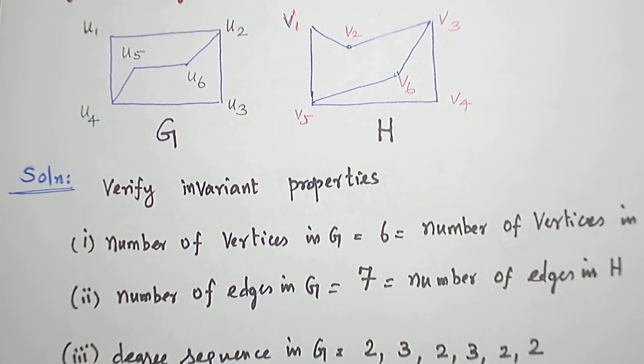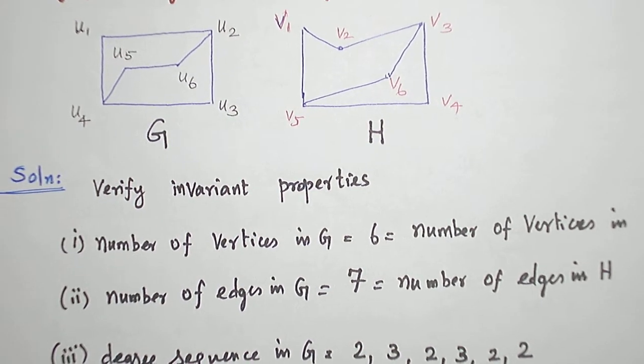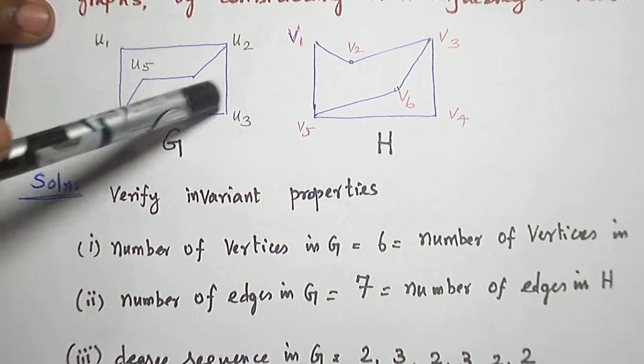We are asked to establish an isomorphism between these two graphs by considering their adjacency matrices. Before proceeding to write the adjacency matrices, the labeling has been given in the problem itself: u1, u2, u3, u4, u5, u6,